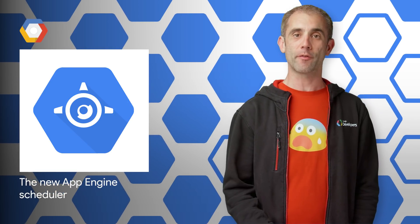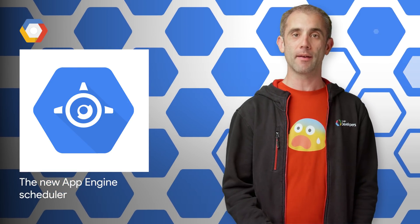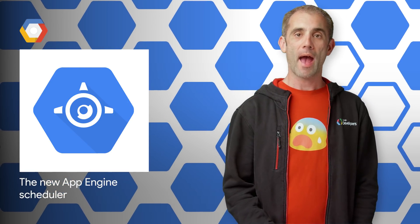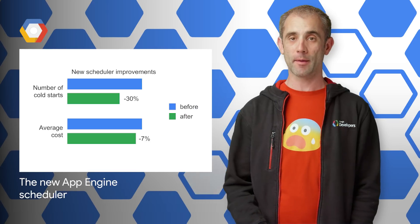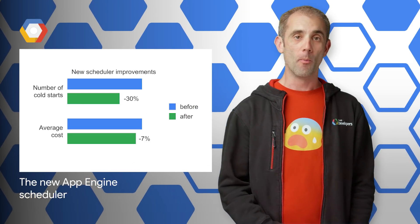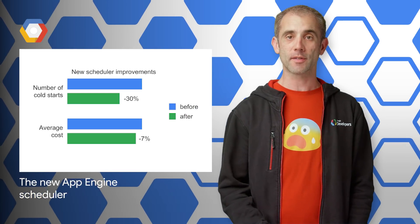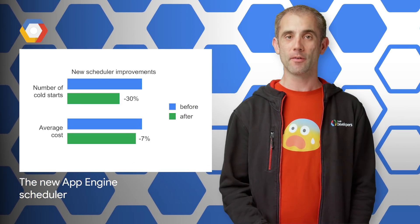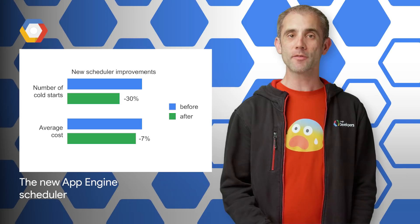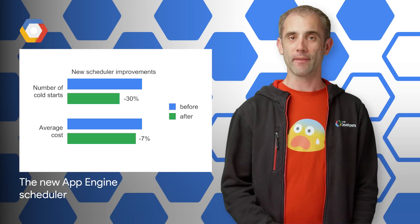We've rolled out the next generation scheduler for App Engine's standard environment, and our tests show that it delivers better scaling performance, more efficient resource consumption, and lower costs for you. Check out the post for metrics and links to get started.